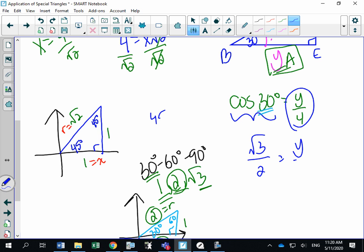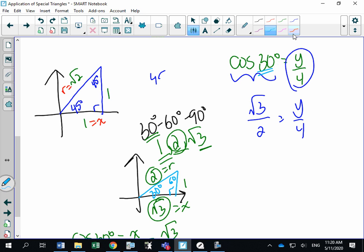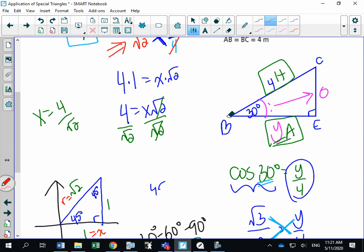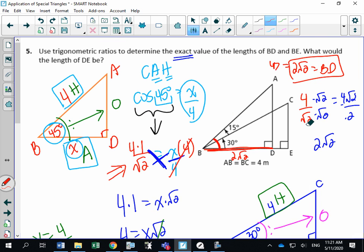Let's cross-multiply to isolate Y. So 4 times root 3 is 4 root 3. And 2 times Y is 2Y. Divide that by 2. Divide that by 2. Y is equal to 4 root 3 over 2. And I'm hoping that you'll see that this could be simplified. Y is equal to 2 root 3. So this distance, BE, is 2 root 3. So BE is 2 root 3. So from here all the way to here, that guy is 2 root 3.